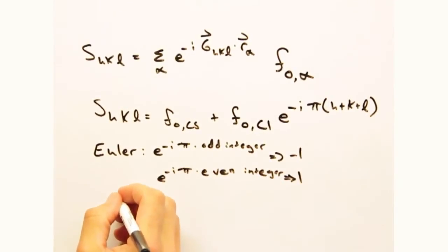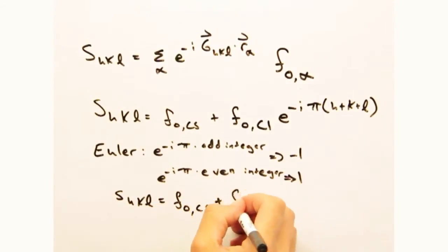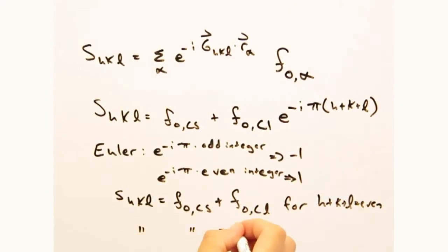All right, cool. Let's put it all together. Okay, we're going to get a structure factor that goes as f_naught_cesium plus f_naught_chlorine for h plus k plus l equals an even integer and f_naught_cesium minus f_naught_chlorine for h plus k plus l equals an odd integer.